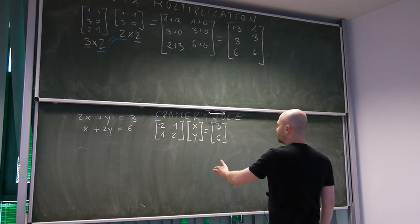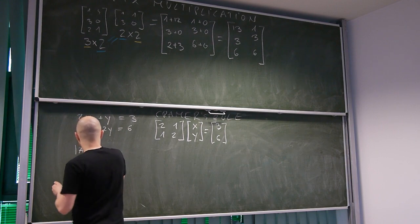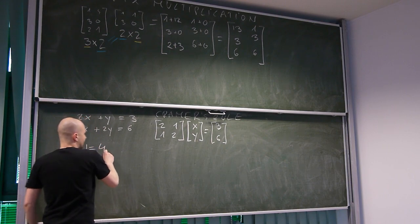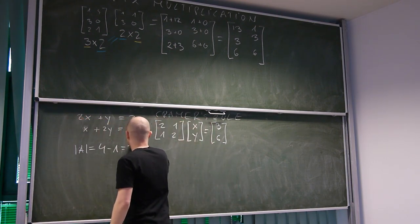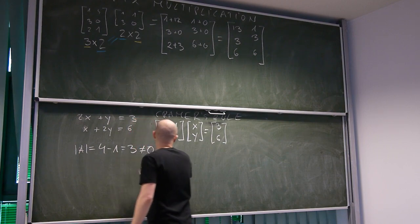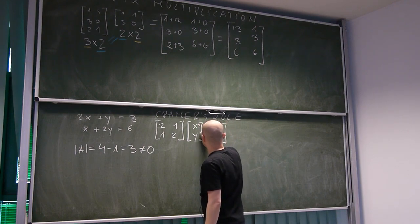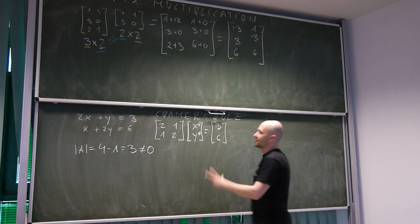First thing we do is we calculate the determinant. And this is two times two, which is four, minus one times one, which is one. This is three. Because this is different than zero, we know that we can find solutions. So, what do we do next?